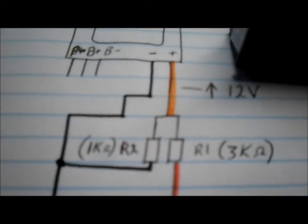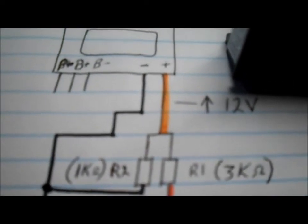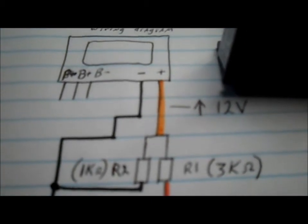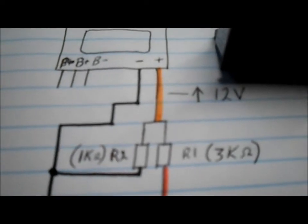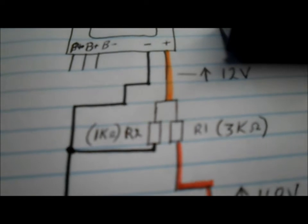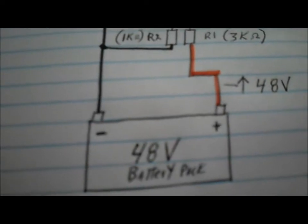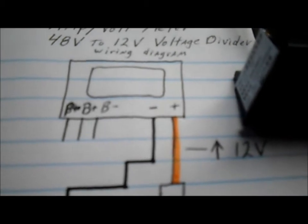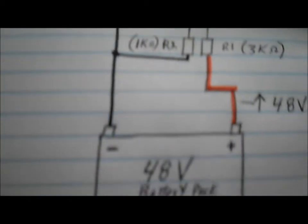And then the 12-volt out comes out at the junction of the 3000-ohm resistor and the 1000-ohm resistor. That's the orange wire. Then the other end of the 1000-ohm resistor connects back to our battery pack, and the ground for our power to our meter also connects to our battery pack.